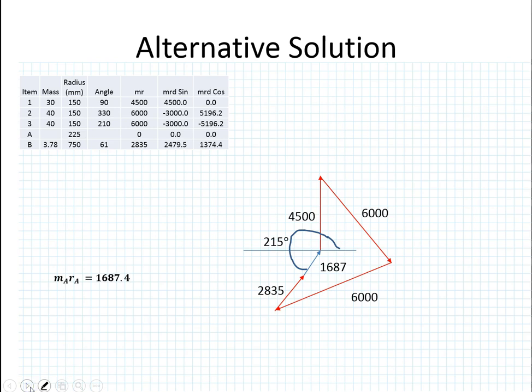So I know MaRa is 1687. I know that the distance was to be 225. We were given that in the question. Therefore, the mass is 7.49. I hope you found that useful. See you soon.